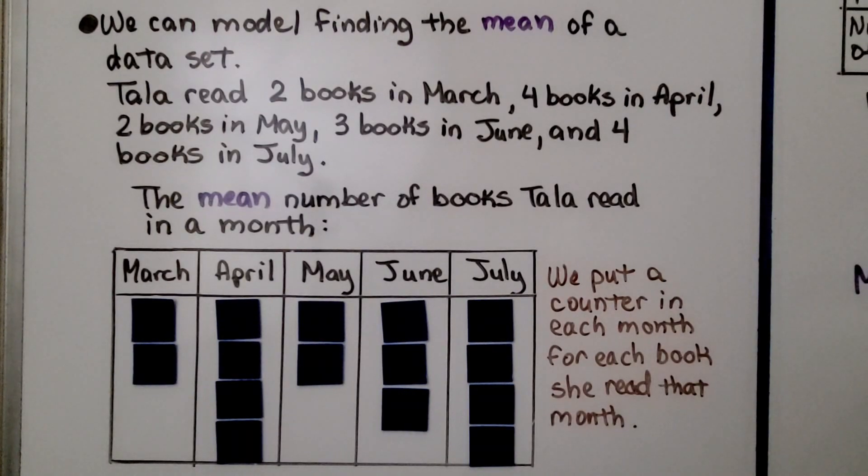We can model finding the mean of a data set. Tala read two books in March, four books in April, two in May, three in June, and four books in July. We put a counter in each month for each book she read that month.